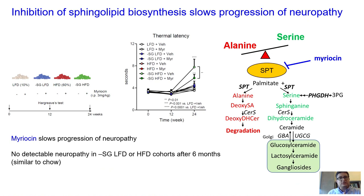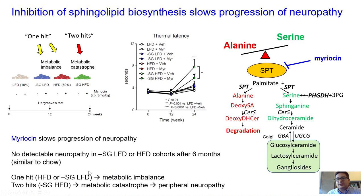One concept we're starting to think through comes from the cancer field — the one-hit, two-hit oncogenicity model. What seems to be happening here is that the refined high-fat diet and the serine-glycine-free low-fat diet each create a metabolic imbalance, but the peripheral nervous system can handle that one hit alone. However, when we combine serine-glycine-free with a high-fat diet background, there's too much, and that pushes into metabolic catastrophe.